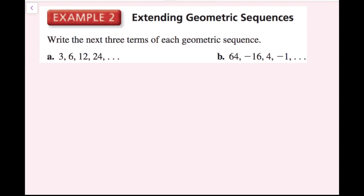For example 2, we want to write the next three terms of each geometric sequence. In order to find the next three terms, I need to find that common ratio, which is the number that I multiply the previous term by. So in part A, I'm starting with 3, then I go to 6, so that's multiplying by 2, and then times 2 again, times 2 again. Well, 24 times 2 is 48, then 48 times 2 is 96, and 96 times 2 is 192. So these are the next three terms of the sequence for part A.